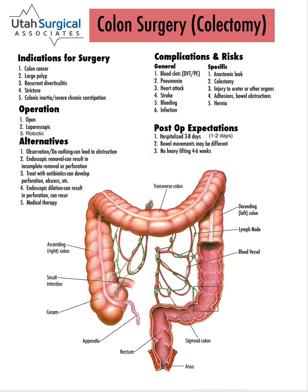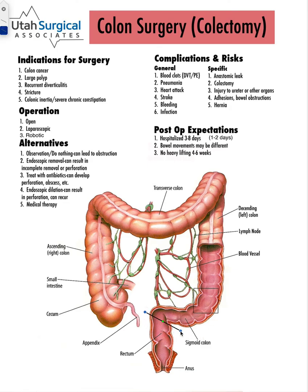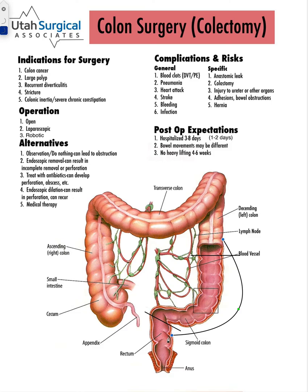Another common area to remove is the sigmoid colon — this is the most common area for diverticulitis. Usually we do that by dividing the colon right at the top of the rectum and then somewhere on the left or descending colon, and then bringing this part of the colon down and attaching it to that part of the colon.